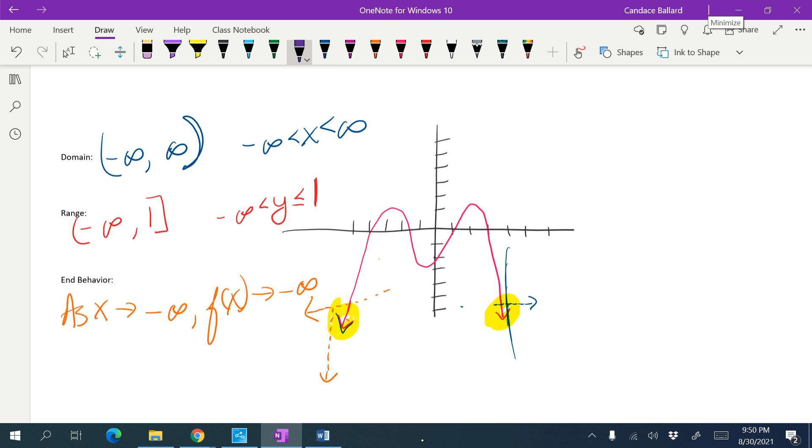Let's look at the other side. So as x approaches, so as my x value is traveling this way, my y value is going down. So as my x is going towards positive infinity, f of x approaches negative infinity.